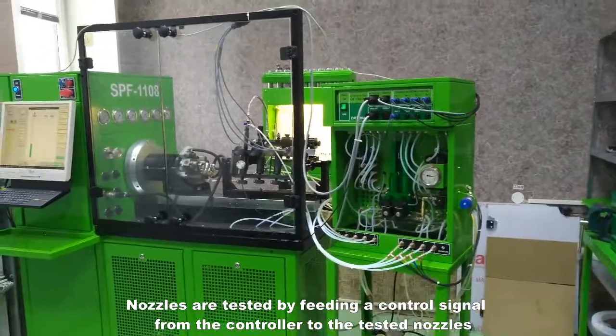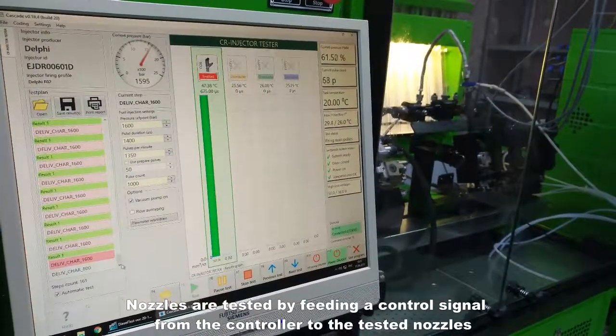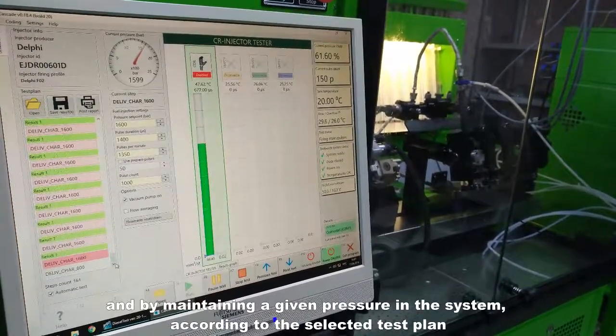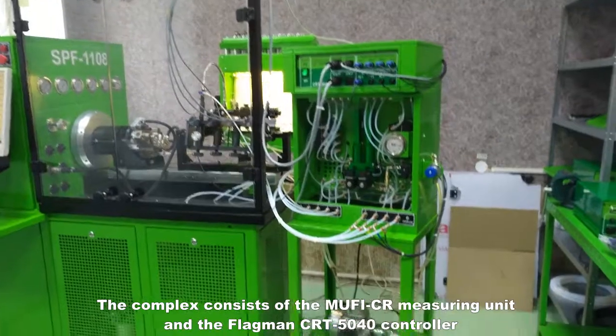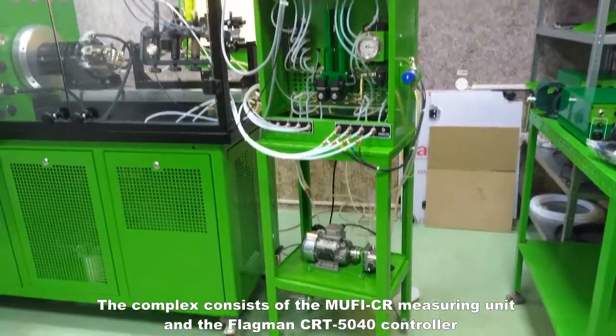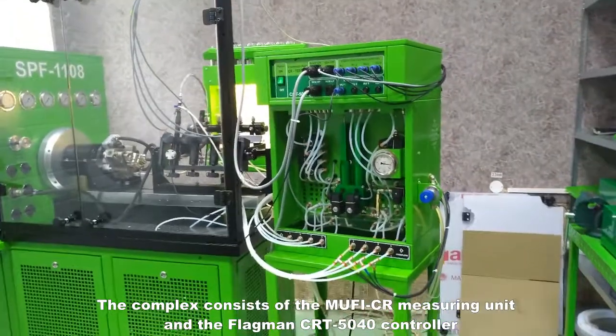Nozzles are tested by feeding a control signal from the controller to the tested nozzles and by maintaining a given pressure in the system according to the selected test plan. The complex consists of the MUFI-CR measuring unit and the Flagman CRT5040 controller.